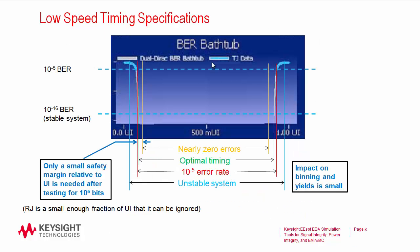At low speeds, it wasn't necessary to introduce the BER bathtub as part of the specification, because the bathtub curve is very, very steep, and so you can get nearly zero errors with just a small amount of safety margin. This bathtub curve is generated by the blue part of the curve from a simulation of about 10 to the 5 bits. The grey part is generated after the dual Dirac approximation. Even though this approximation is extremely steep, any error in the approximation can be taken out by a small safety margin, because the curve is so steep.